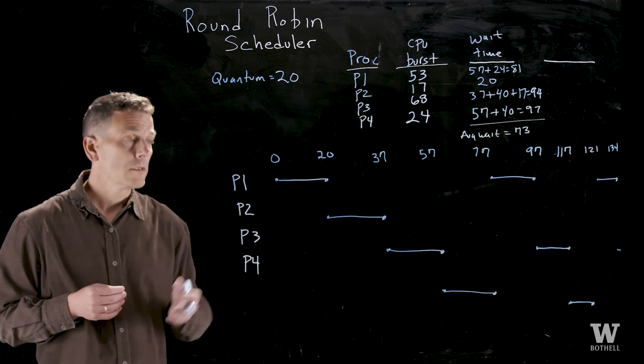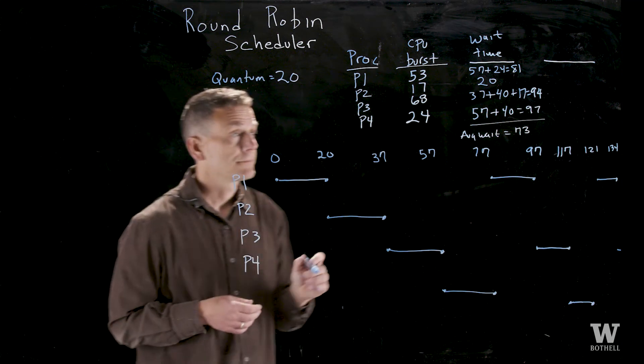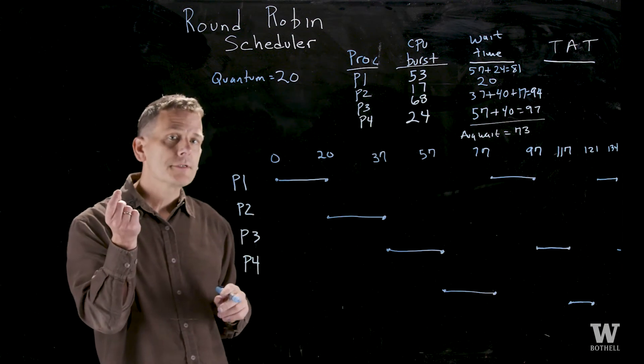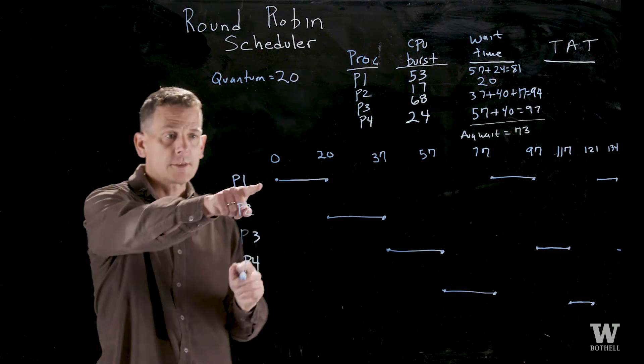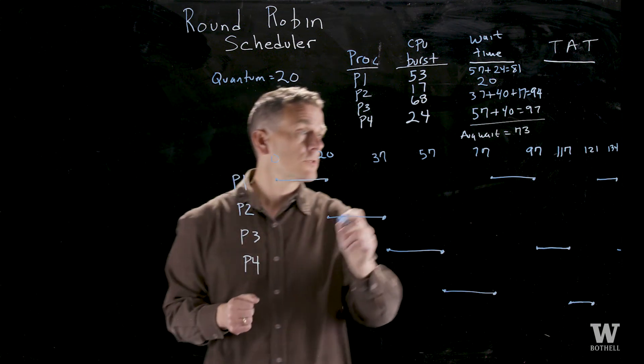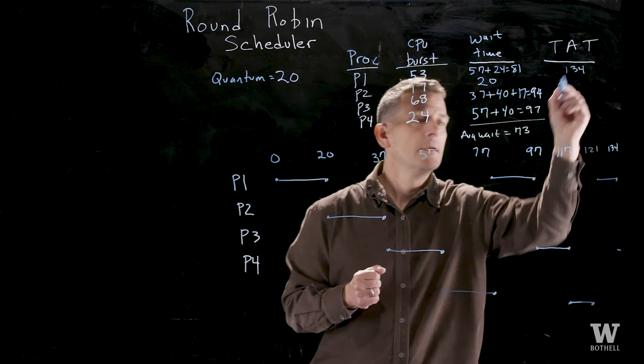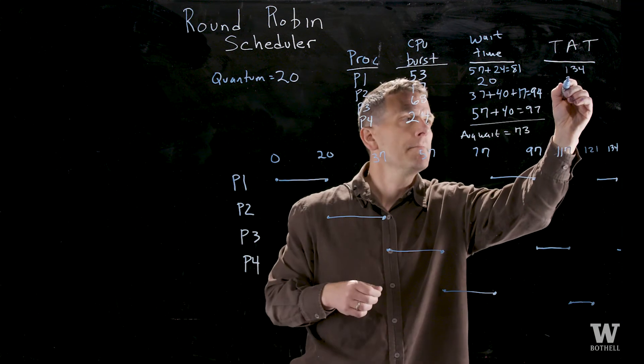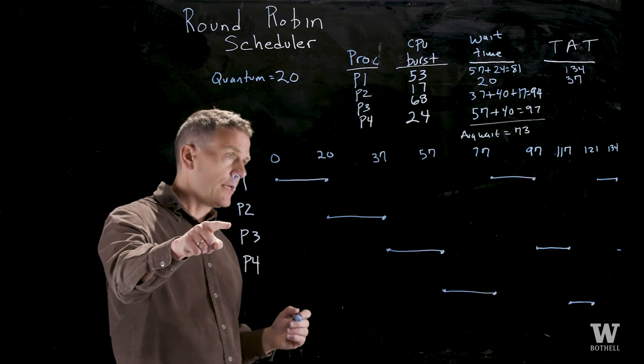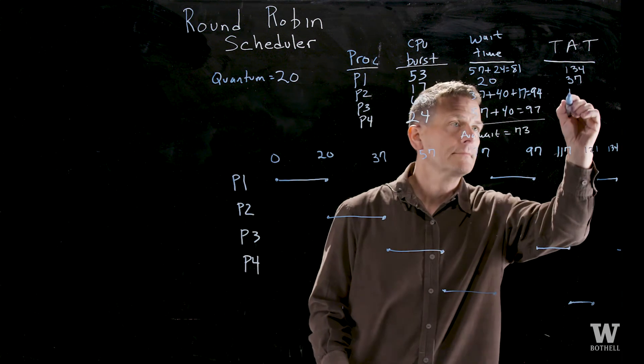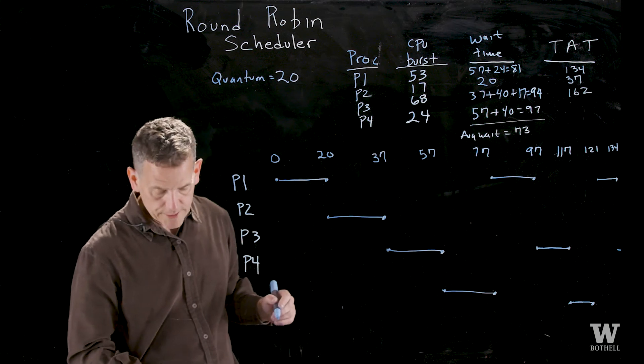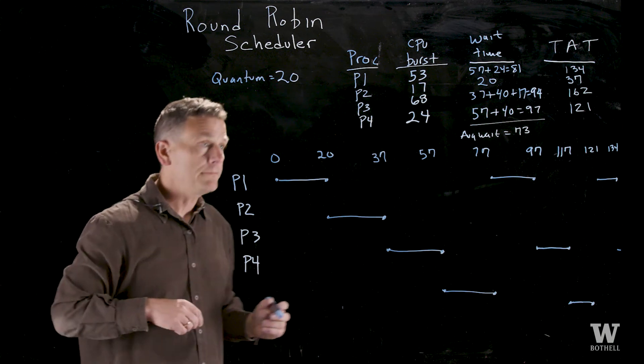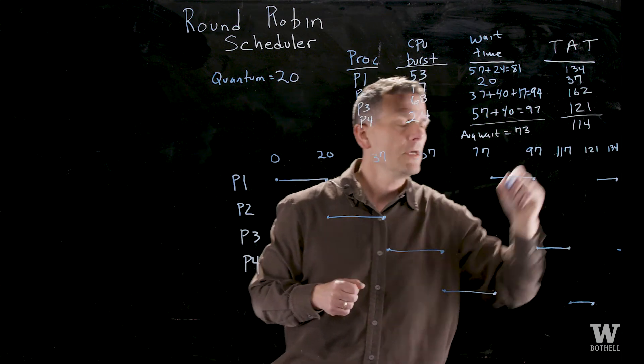Let's calculate one more metric using this example and that's turnaround time. Turnaround time is the amount of time from when the process enters the system to when it exits the system. Process 1, they all entered at 0. Process 1 exited at 134. Process 2 exited at 37. Process 3 exited at 162. And process 4 exited at 121. Average turnaround time, we add those up and divide by 4, is 114.